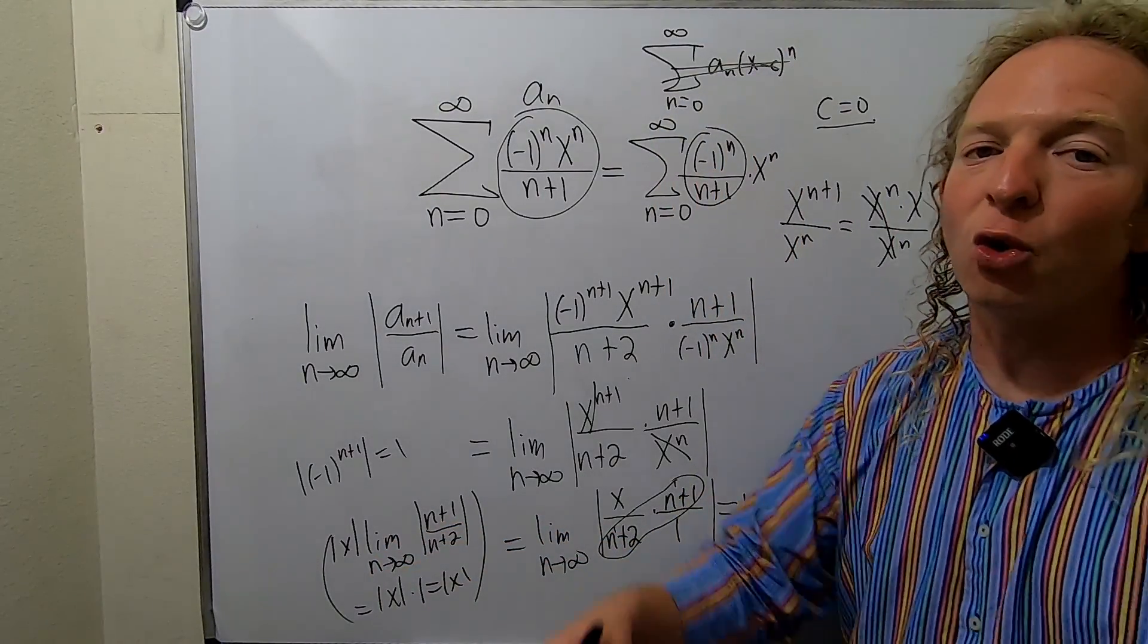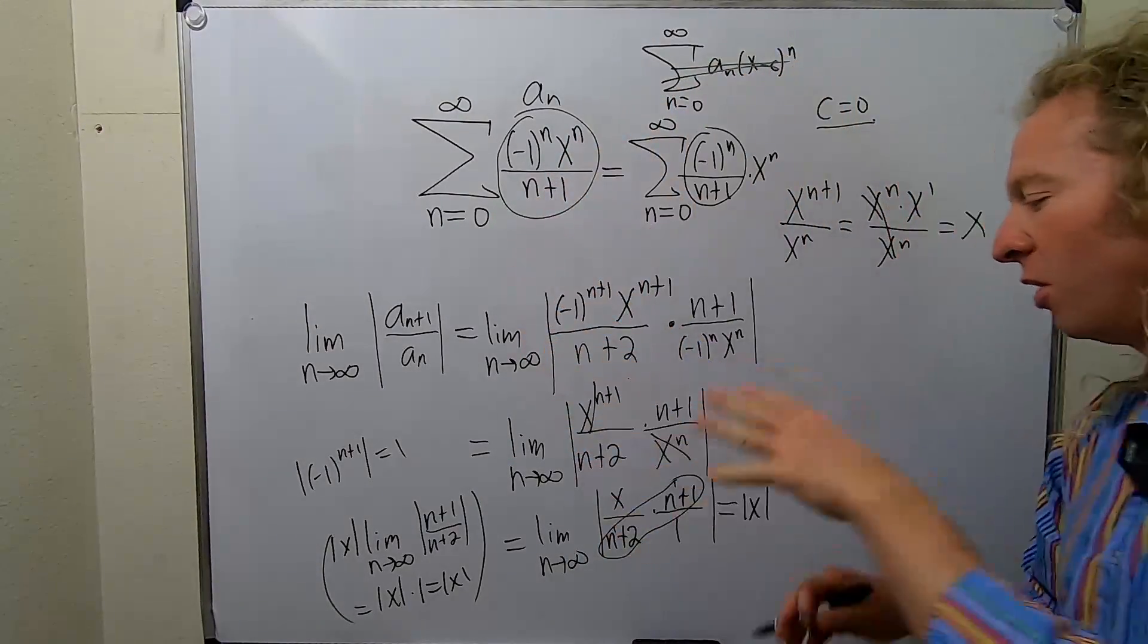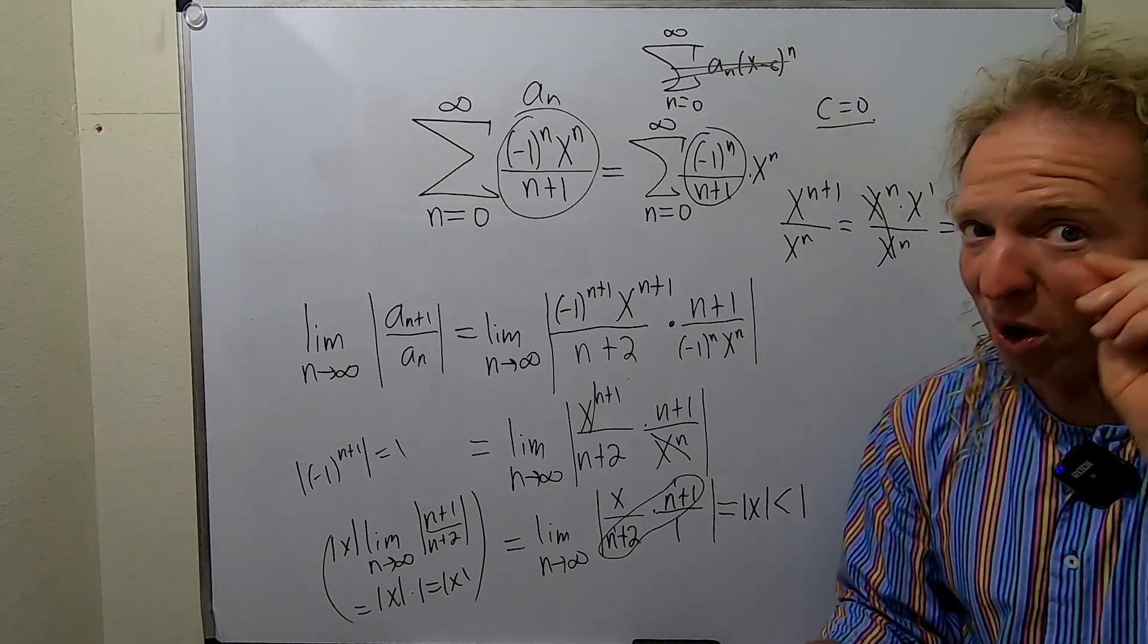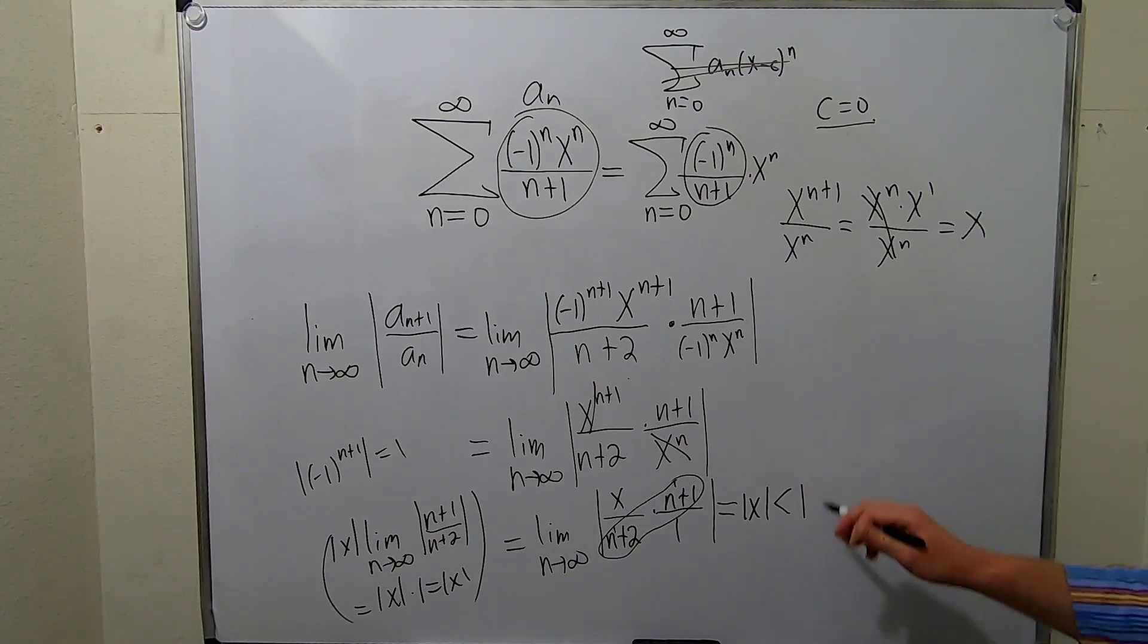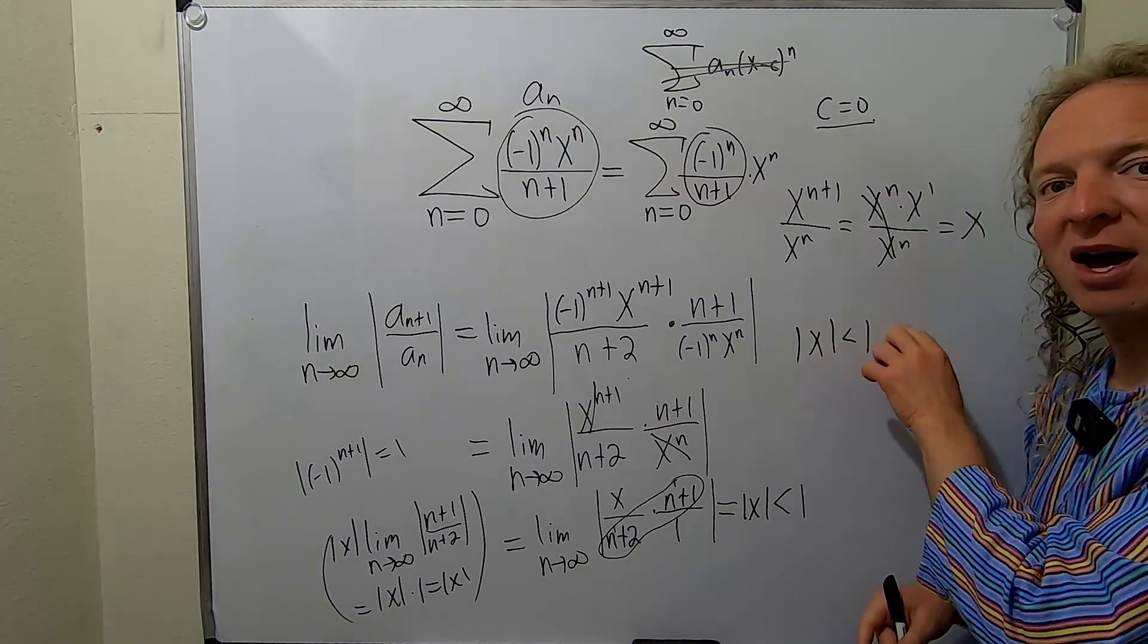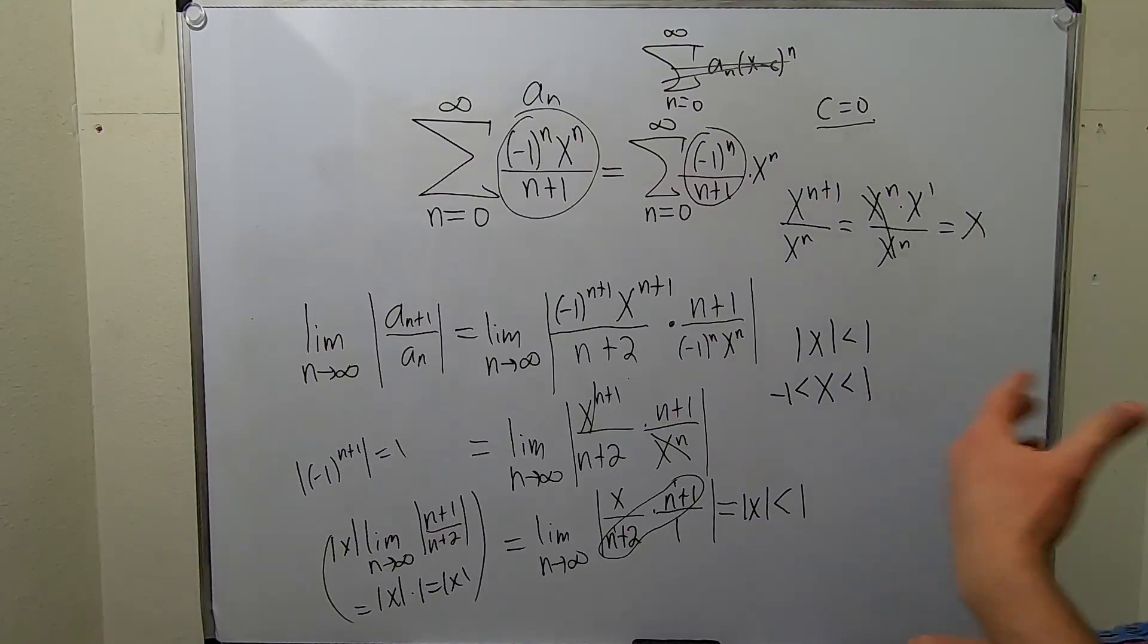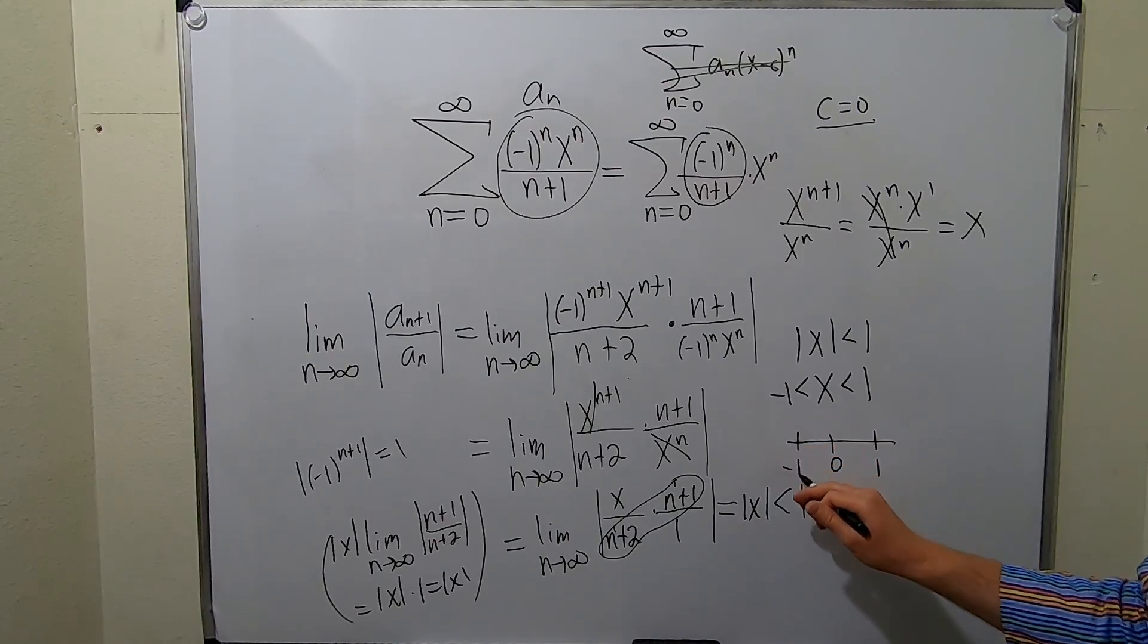We're using the ratio test. So we want it to converge. In the ratio test, the series will converge whenever this limit is less than one. So we put this here because we want to force convergence, because the question wants the radius of convergence. So we want this to converge, so we force it to be less than one. So now we have this here. Whenever you have a less than and you have an absolute value, you can drop the absolute value and you put a one here and a negative one here. That's a rule. And so now you see that this is the center which is zero. Here's one. Here's negative one.